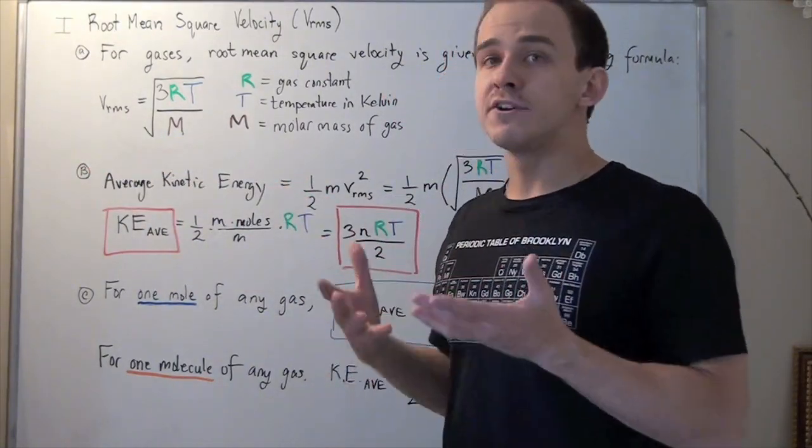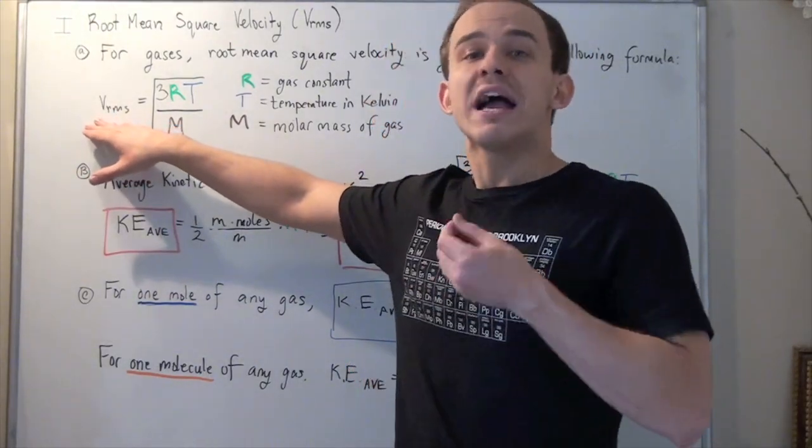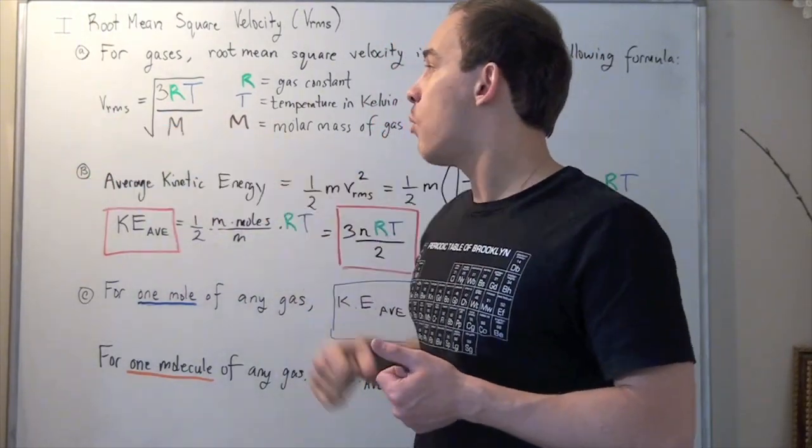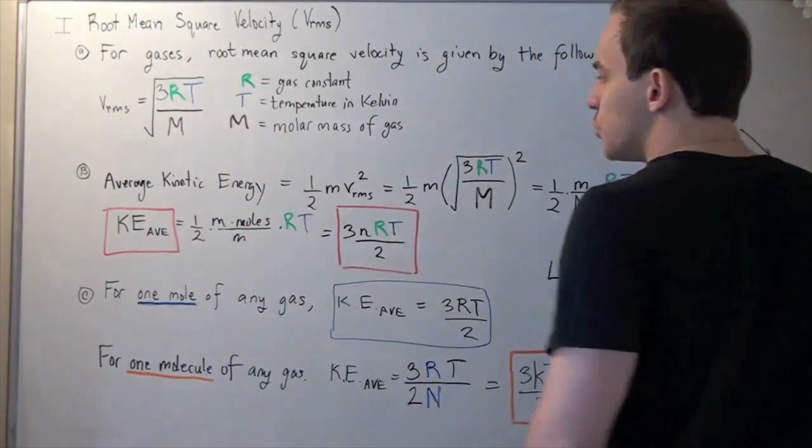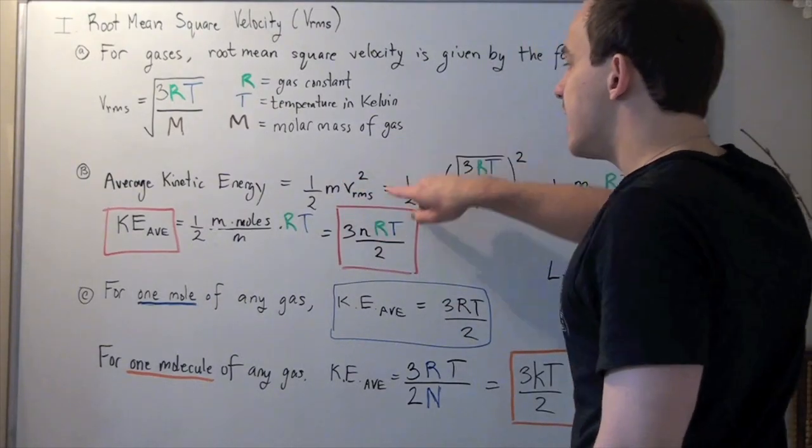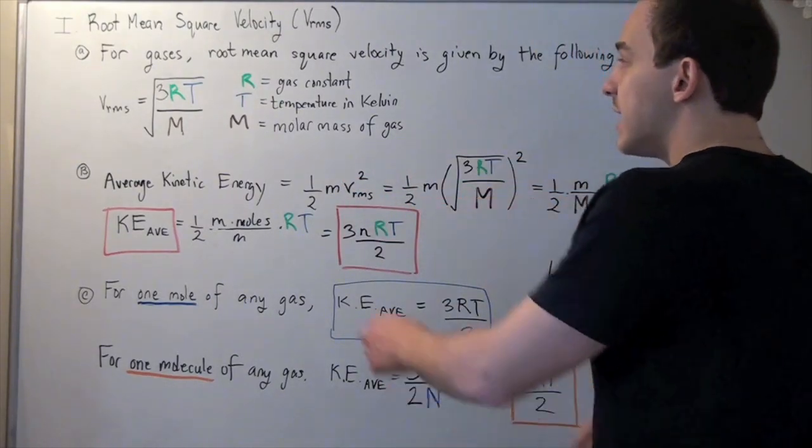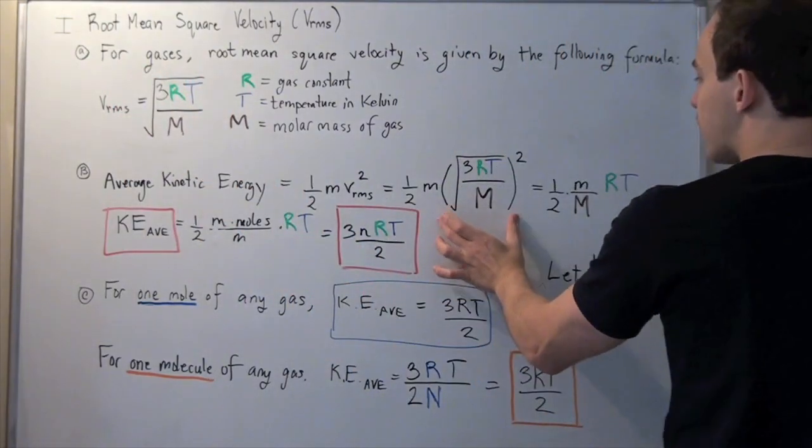And that will give me the average, because this is the average or the quadratic average of my sets of points. So average kinetic energy equals 1/2 times M times VRMS squared equals 1/2 times mass. Now I take my formula for VRMS for gases and plug into my equation.